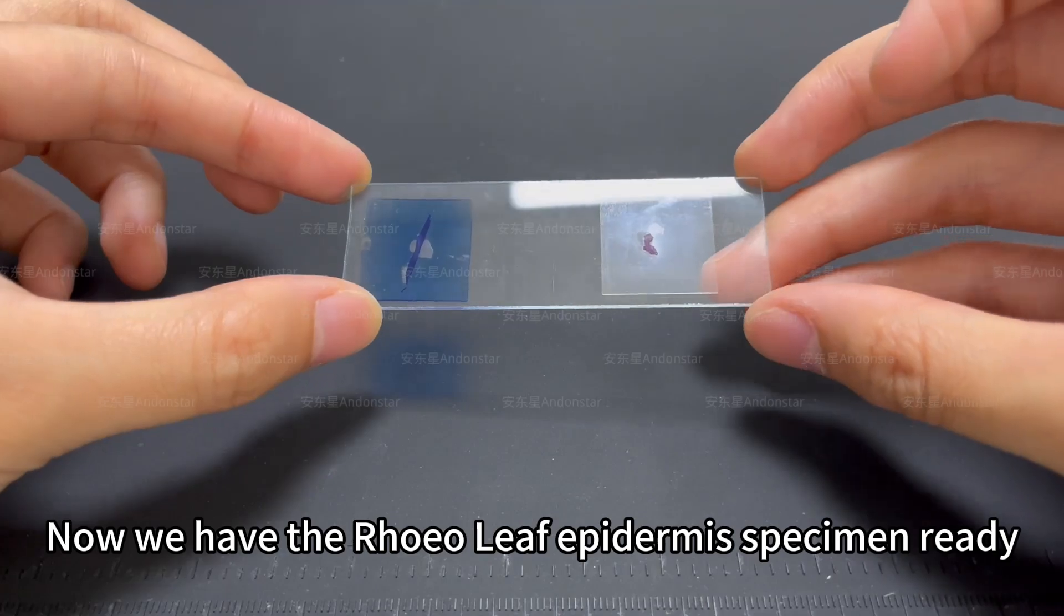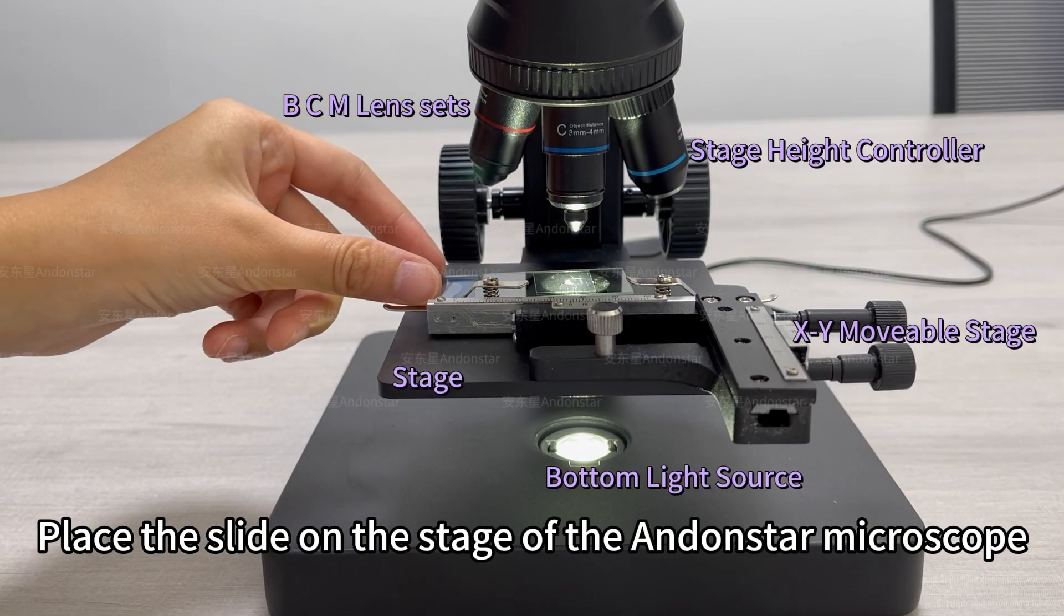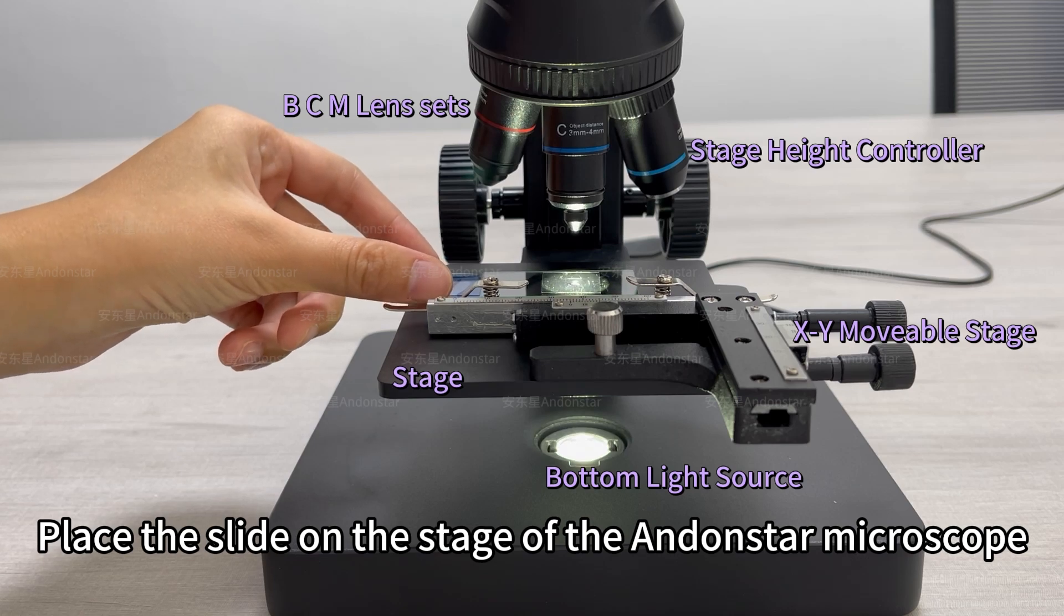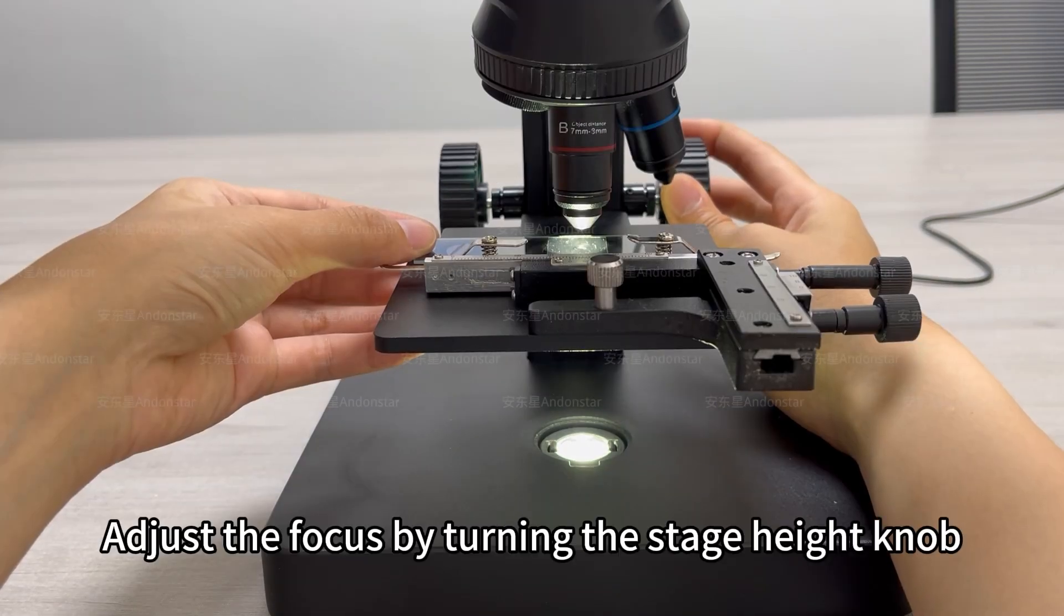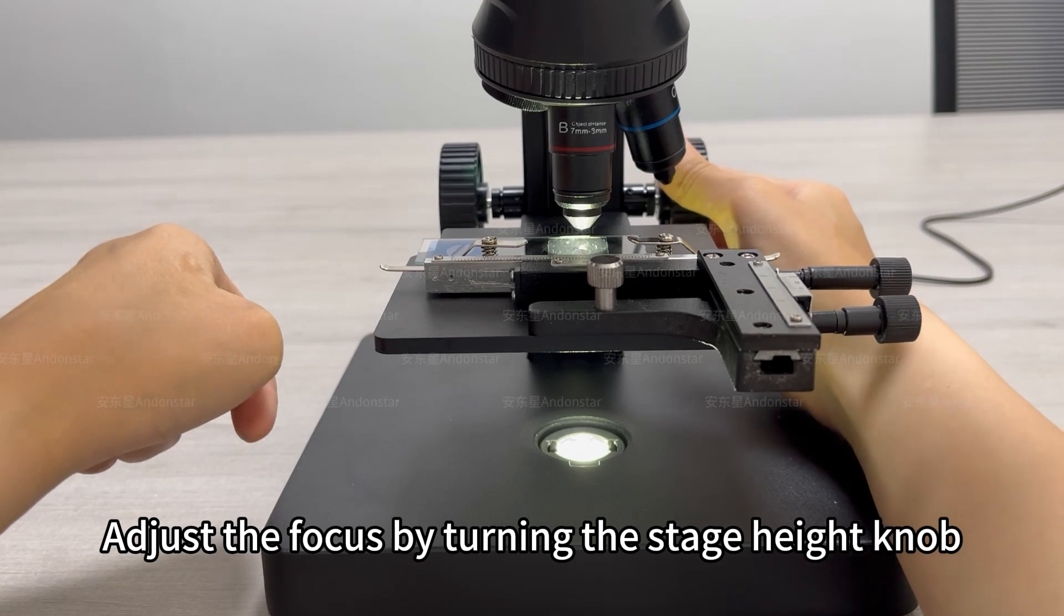Now we have the royal leaf epidermis specimen ready. Place the slide on the stage of the Andonstar microscope. Adjust the focus by turning the stage height knob.